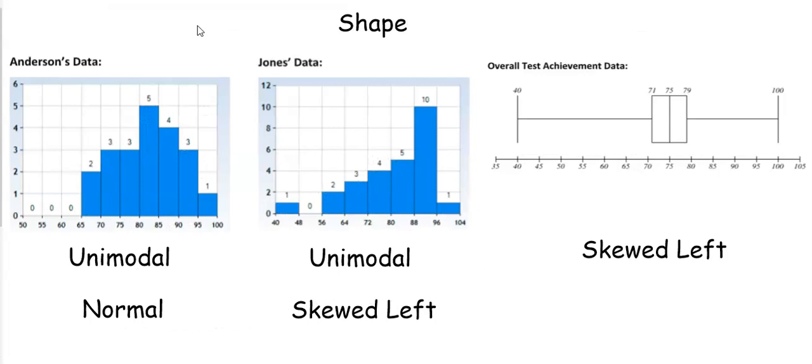We're going to look at an example of comparing three different data sets. These are quiz scores from two different classes and then the overall achievement data. We have Anderson who is a teacher, Jones who is a teacher, and their quiz scores for their classes and these two classes plus a few other classes have their data combined for the overall test achievement data.